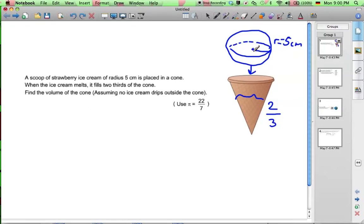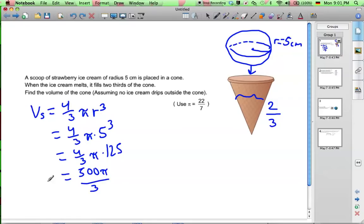Now, we need to find the volume of the sphere, so we can find the volume of two-thirds of the cone here. So the volume of a sphere equals four-thirds pi r cubed, and our radius is five, so that's going to be five cubed. That equals four-thirds pi times 125, and four times 125 is 500, so we're going to have 500 pi out of three. Let's leave it like that. That's our exact volume of the sphere.